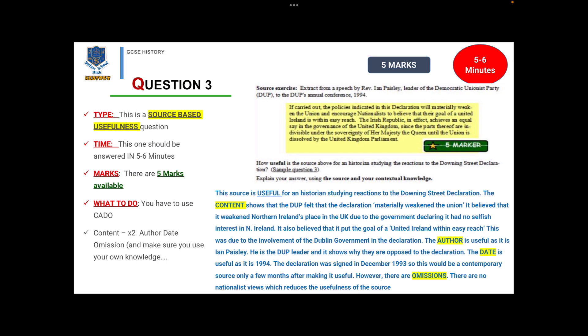The author is useful as it is Ian Paisley, the DUP leader, and it shows why they opposed the declaration. The date is useful as it's 1994, and the declaration was signed in December 1993, so this is a contemporary source only a few months after, making it useful. Lastly, I have to include an omission. However, there are omissions: there are no nationalist views which reduces the usefulness of this source. It's only showing one angle of the reactions to the declaration.